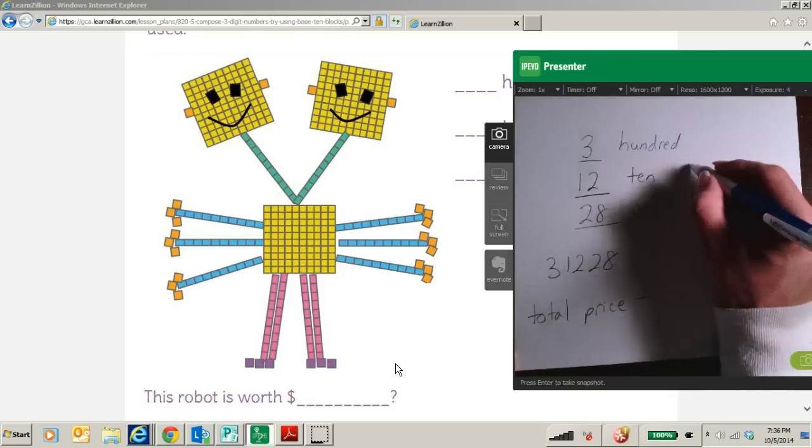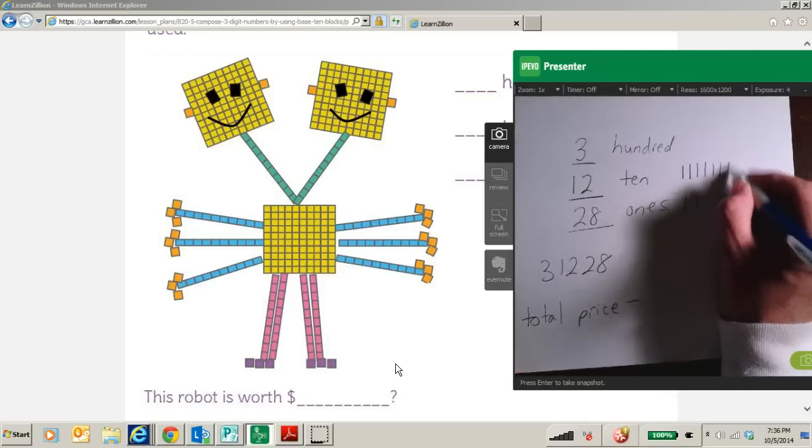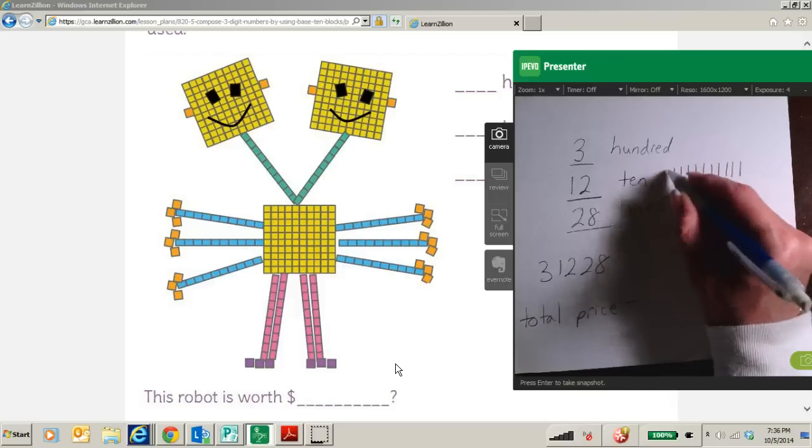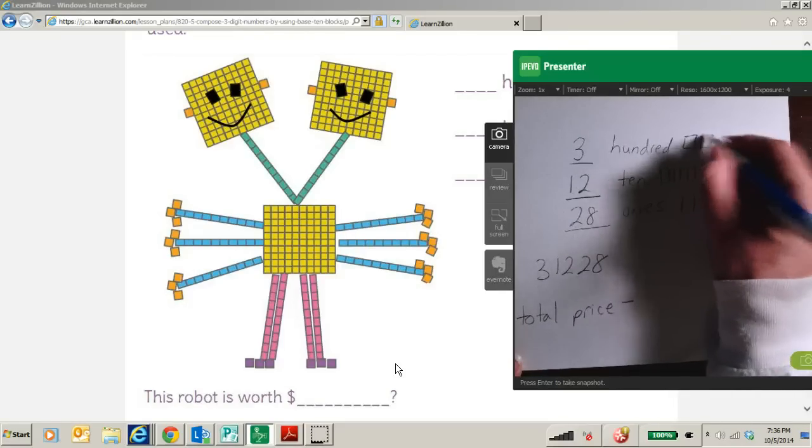Here I have 12 tens, 1, 2, 3, 4, 5, 6, 7, 8, 9, 10, 11, 12. And then I have 3 hundreds.